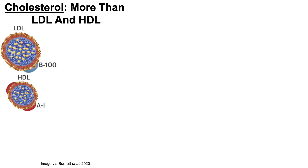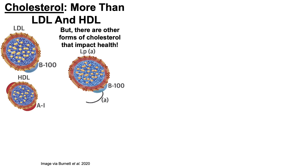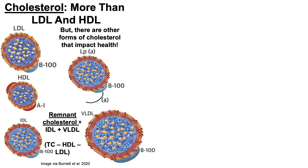When we hear about cholesterol, usually what comes to mind is LDL and HDL. But there are other forms of cholesterol that impact health, including lipoprotein A (LP little a), but also remnant cholesterol, which is defined in the fasting situation as the combination of intermediate-density lipoprotein (IDL) and very low-density lipoprotein (VLDL). In the fasting state, this can be calculated as: total cholesterol (TC) minus HDL minus LDL equals remnant cholesterol, or IDL plus VLDL.